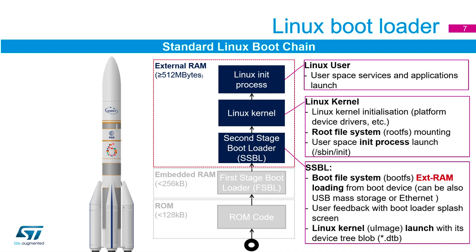The Linux kernel gets loaded and initialized, loading all the device drivers it needs. It creates the root file system and loads all initialization processes. Once the kernel is up and running, it generates the user filesystem — the user space — and launches all the different applications running on the STM32MP1.